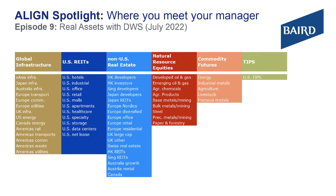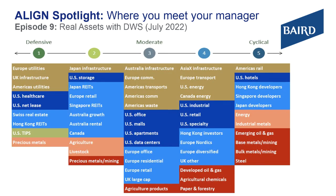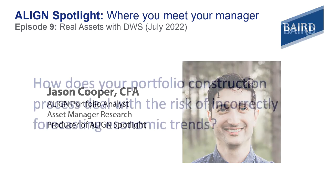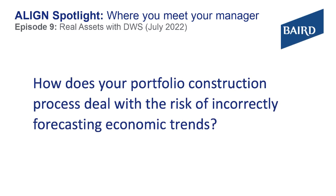When you break it down to the subsector level, you're talking 50 to 60 different unique return drivers within the real assets universe. There is a unique portfolio construction process that takes advantage of those 50 to 60 unique subsectors. Maybe you could speak about how you diminish the risk of incorrectly forecasting emerging economic trends from a portfolio construction perspective — how your model works and influences how you're building out your portfolios.